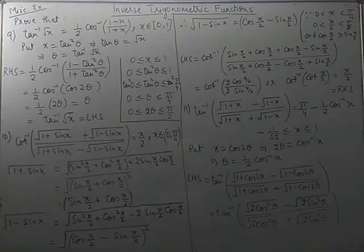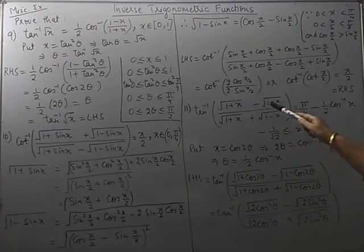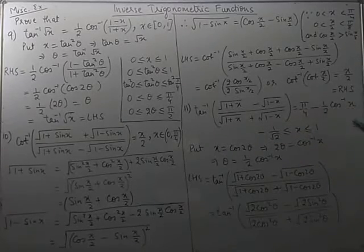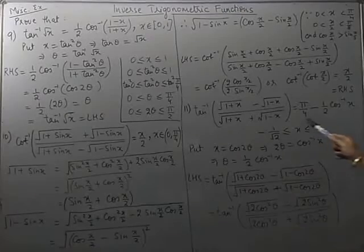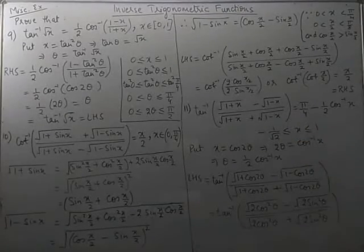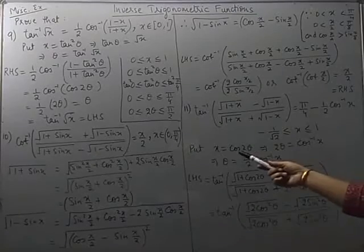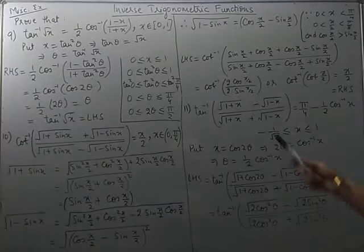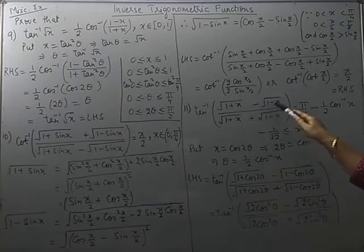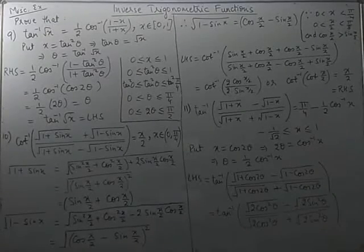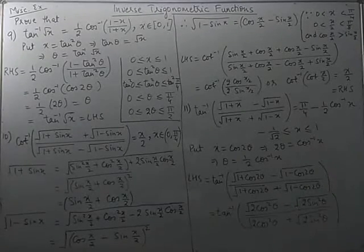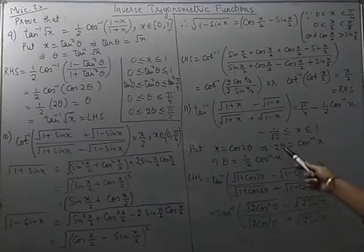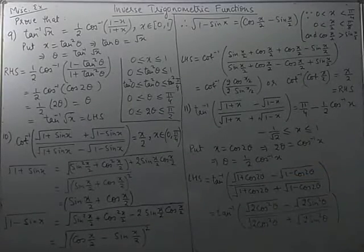Moving on to the 11th one: we will show that tan inverse of [√(1+x) − √(1−x)] divided by [√(1+x) + √(1−x)] equals π/4 minus half of cos inverse x. Now substituting x by cos 2θ, because we can then use the known results for 1 + cos 2θ and 1 − cos 2θ. If x equals cos 2θ, then 2θ equals cos inverse x, so θ equals half of cos inverse x.